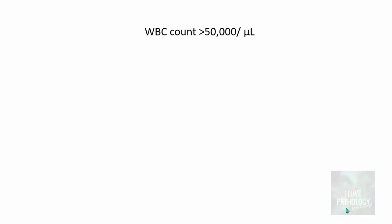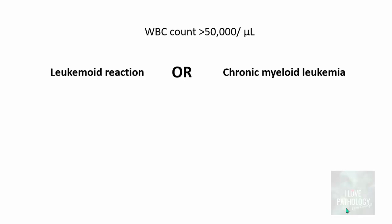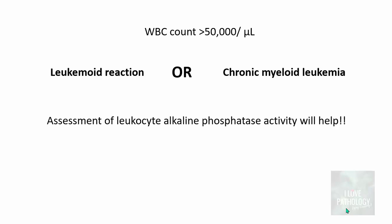It could be a leukemoid reaction or it could be chronic myelogenous leukemia, which is a hematopoietic malignancy. It is always important to differentiate these two entities because the entire management changes when you diagnose a case of chronic myelogenous leukemia. One of the simpler ways to differentiate leukemoid reaction from CML is the assessment of leukocyte alkaline phosphatase activity — in other words, finding the LAP score.